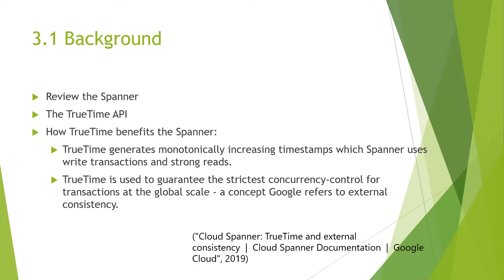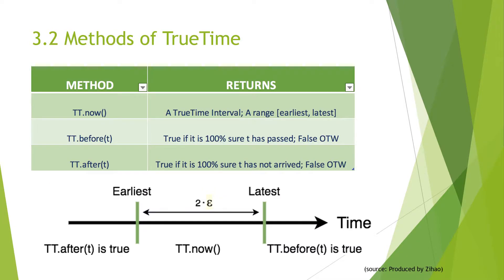TrueTime provides various API calls. The now method returns a time interval with the earliest time as the lower bound and the latest time as the upper bound. The before method of T returns true if it is 100% sure that T has passed; otherwise, we get false. We also have the after method. When two intervals don't overlap, then we know the calls were definitely ordered in real time. The range given by the now method is two times epsilon, which represents the instantaneous error bound.